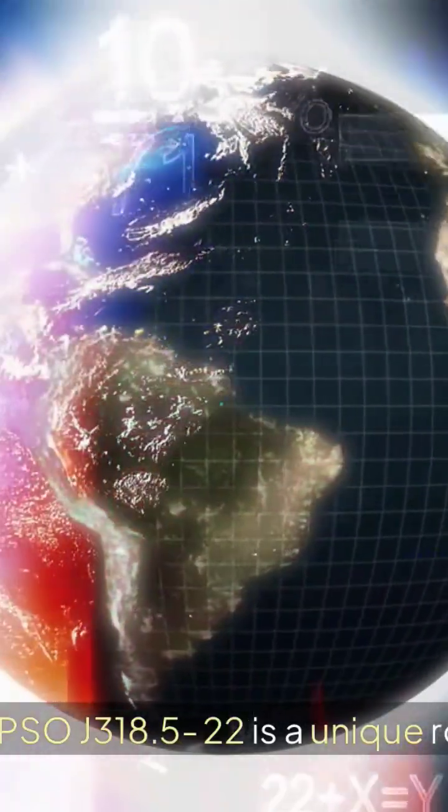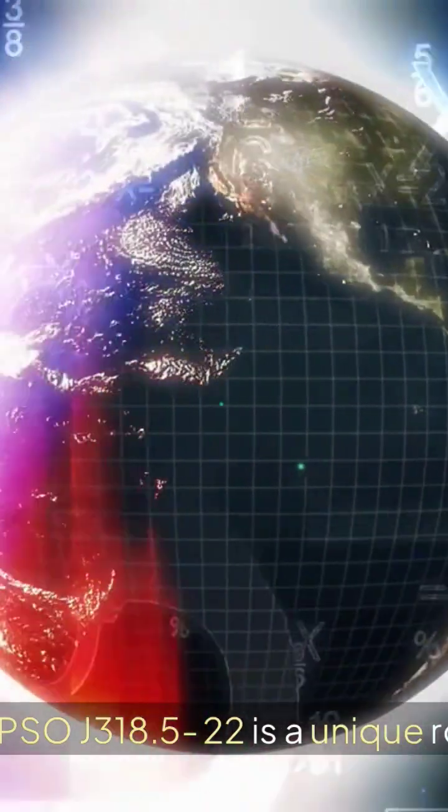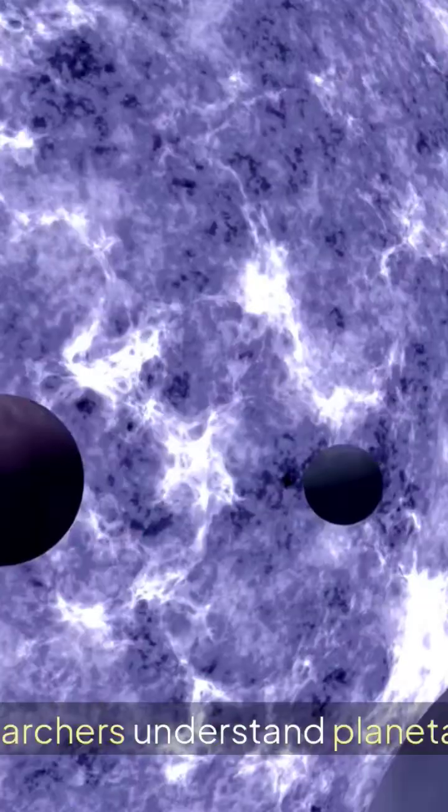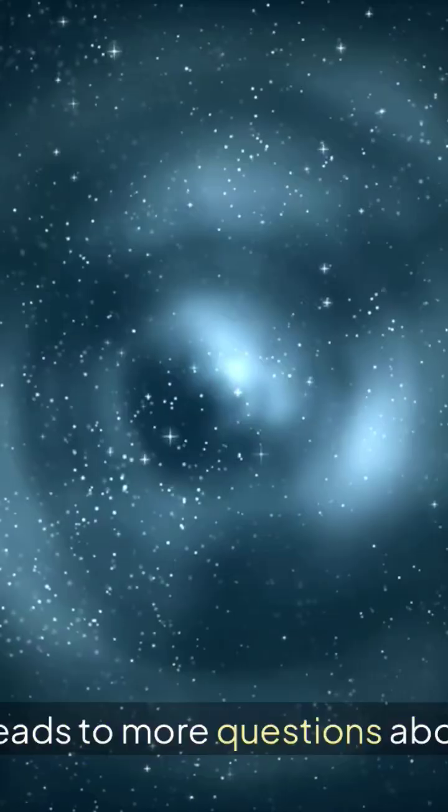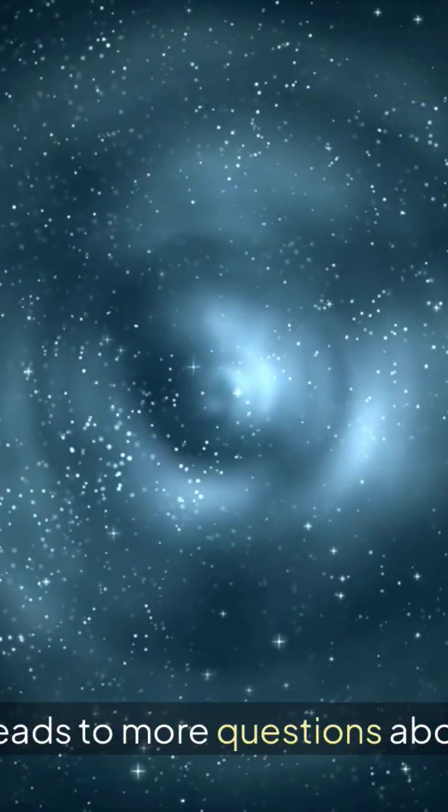In summary, PSO J311.522 is a unique rogue planet. It helps researchers understand planetary systems. This discovery leads to more questions about our universe.